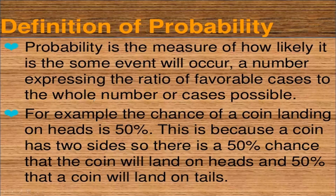Probability can also be written as a fraction. For example, when tossing a coin, if you're asked what is the probability it will land on heads, the favorable outcome is one, and the total number of outcomes is two — head and tail. So the denominator is two, making it one-half, which is the same as 50%. Probability can be expressed as a percent, a fraction, or a ratio.